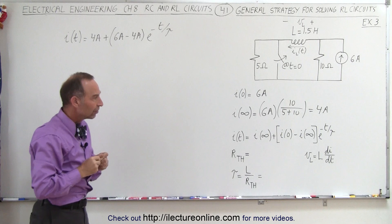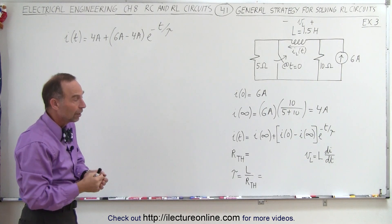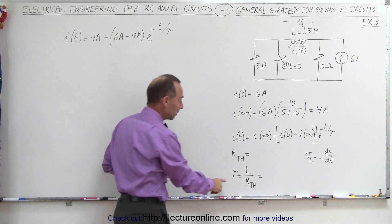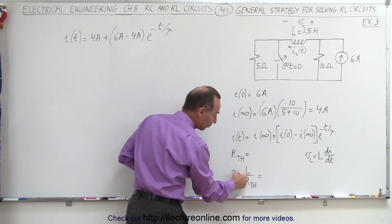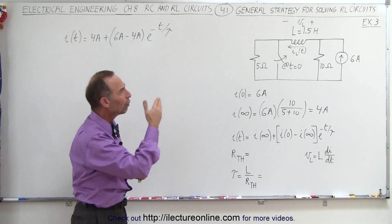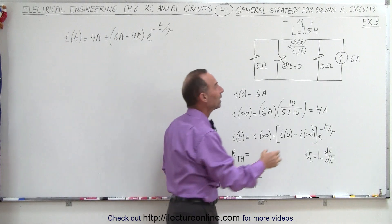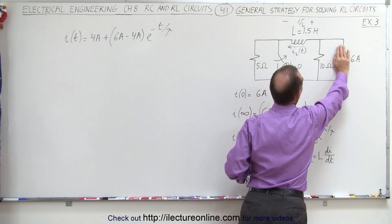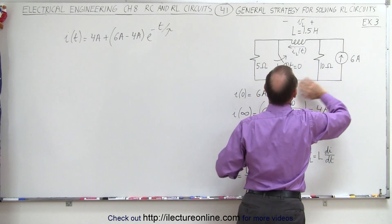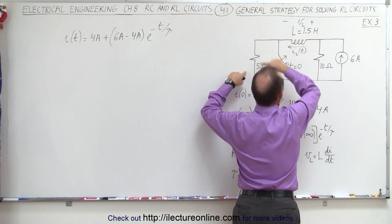Now the time constant needs to be found and in this case it's a little bit more complicated. The best way to do that is to say that the time constant is equal to the inductance divided by the Thevenin resistance in the circuit. That's obtained by shorting out all voltage sources and removing or opening the branch where you have a current source.